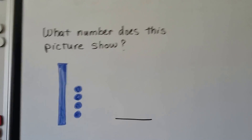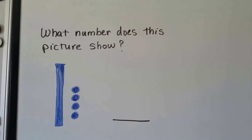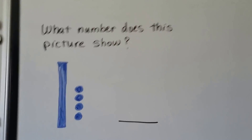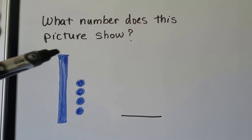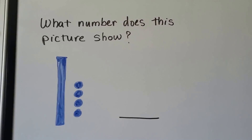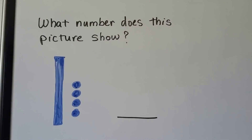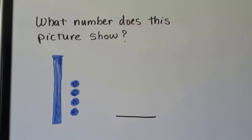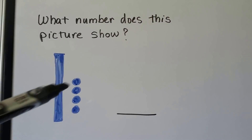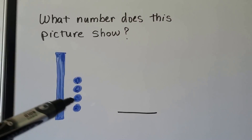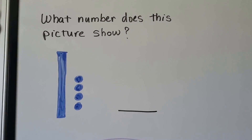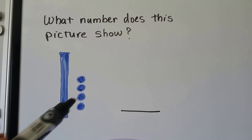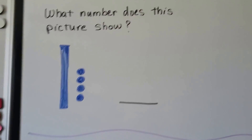What number does this picture show? Do you know what this long bar can represent? This is going to be a ten, and then we have four ones. We have ten, eleven, twelve, thirteen, fourteen.